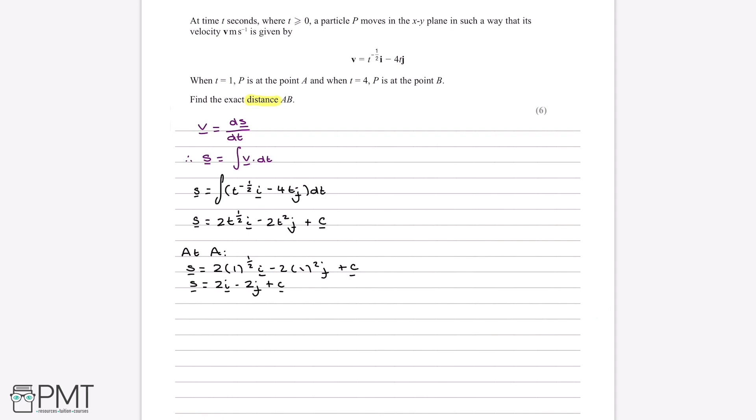And now if we do the exact same thing for b, we know that at b, t is equal to 4. So if we substitute in t equals 4, we have 2 multiplied by 4 to the power of a half i, minus 2 multiplied by 4 squared j, again plus c, and this is equal to 4i minus 32j plus c again.